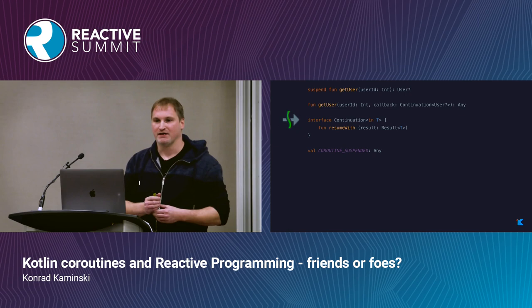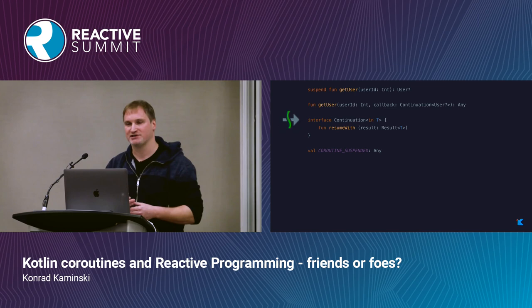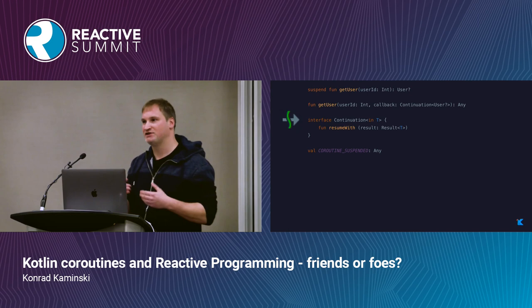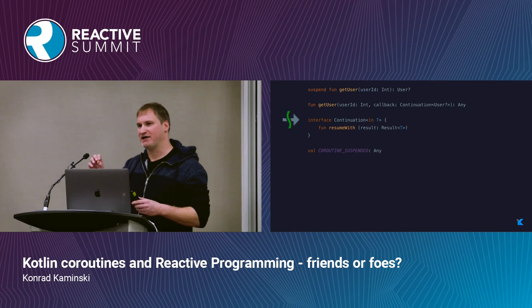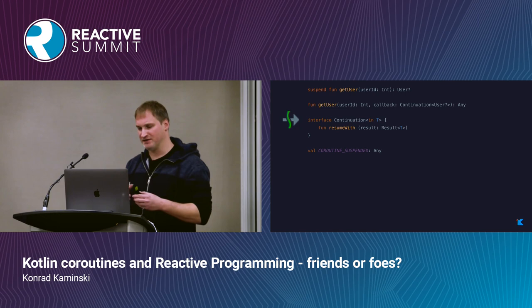To create a suspending function in Kotlin, you just add the suspend modifier. But how does it work under the hood? If you create a suspending function like the getUser function, the compiler generates a function with a slightly different signature. There will be an additional parameter of type continuation, which I called callback, and the return type of the function is now Any — like Object in Java.